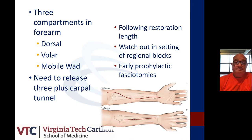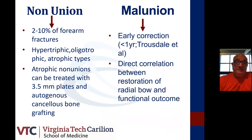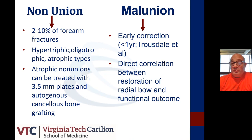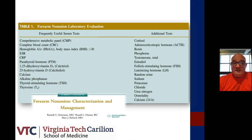Nonunion is not common and varies between 2 and 10%. It can present as hypertrophic, oligotrophic, or atrophic. Atrophic nonunions can be treated with plating, autologous bone grafting, and vascularized bone grafting when the defect is greater than 5 centimeters. Malunion, when present, early correction is recommended — the Mayo group showed good results when malunion was identified and treated within the first year. There is a direct correlation between restoration of the radial bow and functional outcome. Workup for nonunions should include labs such as a comprehensive metabolic panel, parathyroid hormone, and vitamin D.